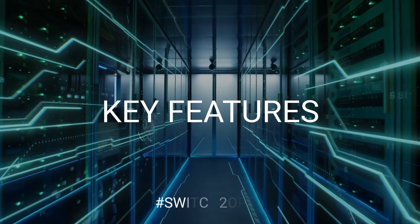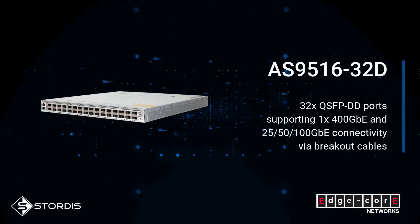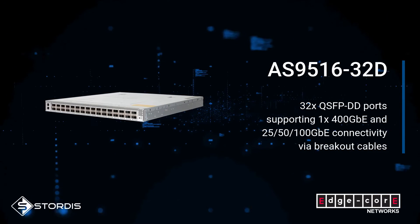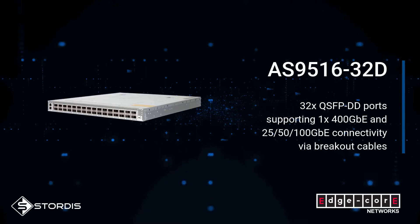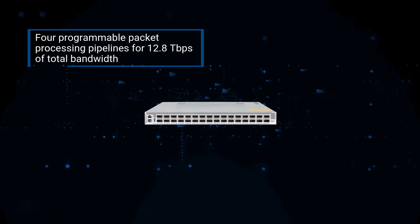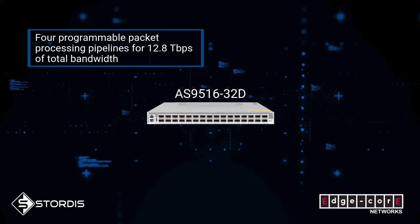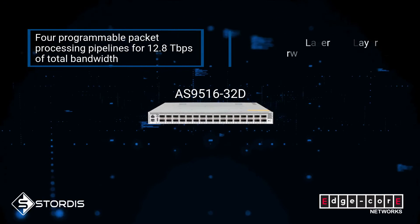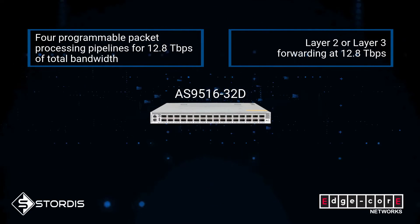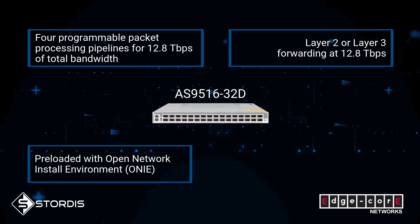Key Features: 32 QSFP-DD ports supporting 1x400 Gigabit Ethernet and 25, 50, and 100 Gigabit Ethernet connectivity via breakout cables. 4 programmable packet processing pipelines for 12.8 Terabits of total bandwidth. Layer 2 and Layer 3 forwarding at 12.8 Terabits. Pre-loaded with Open Network Install Environment (ONIE).